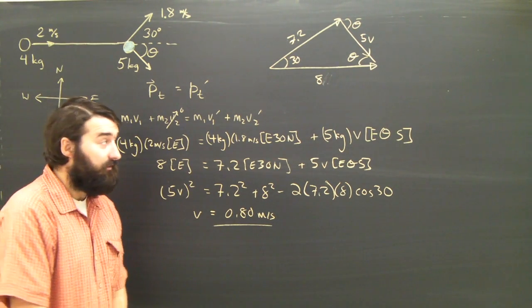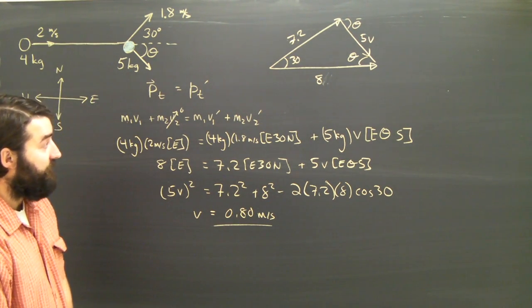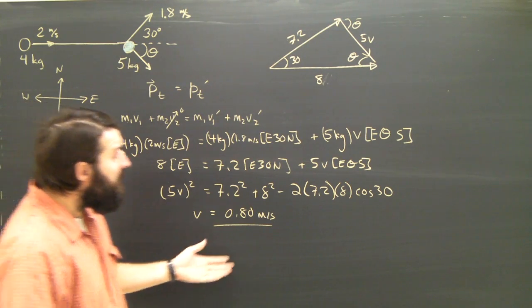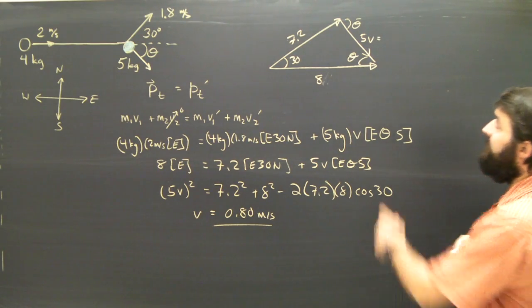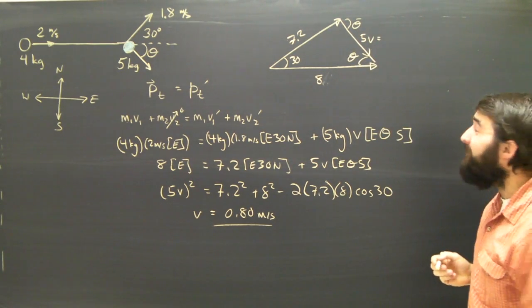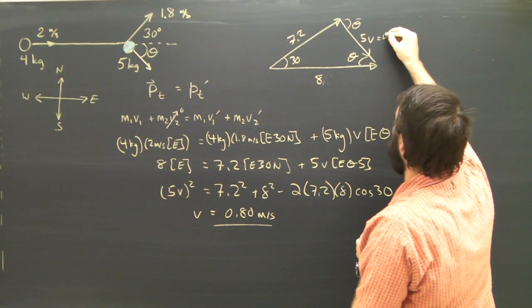A speed, rather, as I still don't know the actual direction. But that is the hardest part because now that I know the velocity here, I know that this side of the triangle, which is not 0.8 but 5 times 0.8, which comes out to 4.